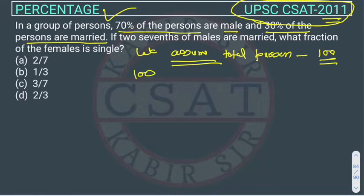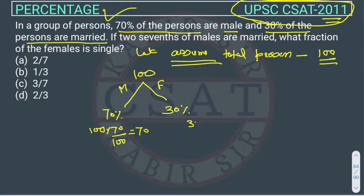Out of these 100, how many males are there? Males are given 70%. If 70% are male, then the remaining will be female, so 30% are female. The figure will be 70% of 100, so it will come out 70, and 30% of 100 will come out 30. So there are 70 male and 30 female.